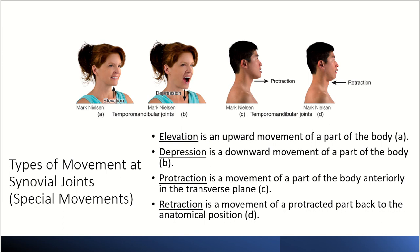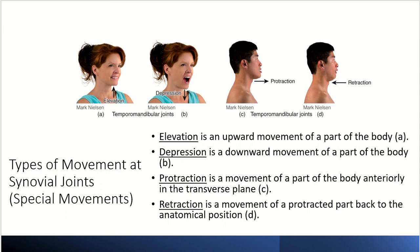There are also special movements. Elevation is an upward movement of a body part — for example, closing your mouth is elevation of the mandible. Depression is a downward movement — opening your mouth in shock is depression of the mandible. Protraction is the movement of a body part anteriorly in the transverse plane, like sticking out the jaw. Retraction moves a protracted part back to its anatomical position.